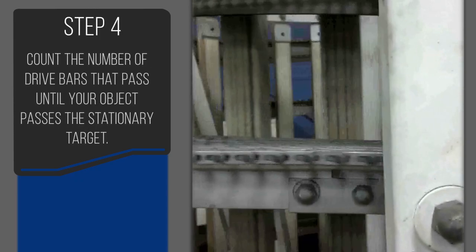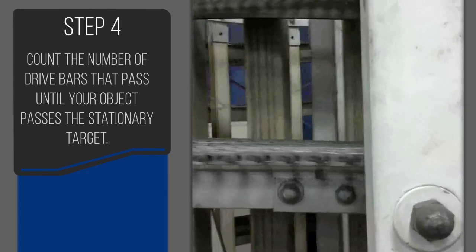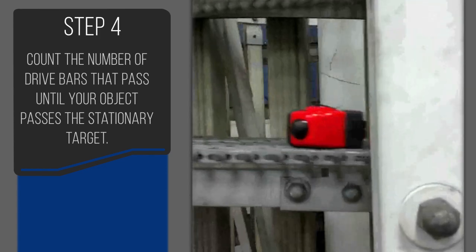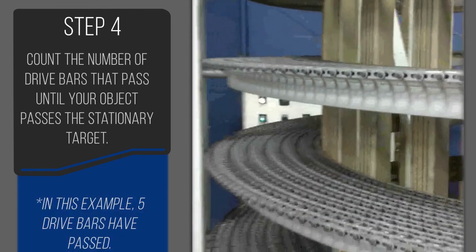When your marker passes the stationary object again, count the number of drive bars until the object you place on the belt passes. In this example, five drive bars have passed.